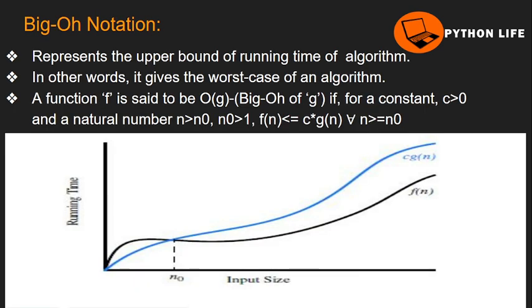Big O notation represents the upper bound of the running time of an algorithm. In other words, it gives the worst case of an algorithm — we use the worst case to measure the maximum amount of time of an algorithm.